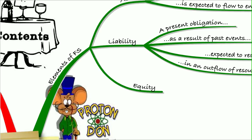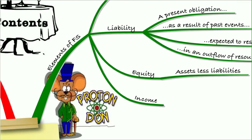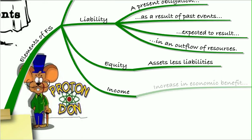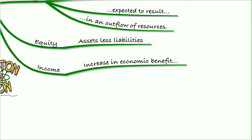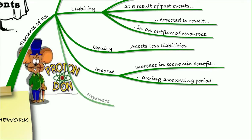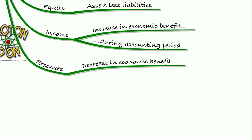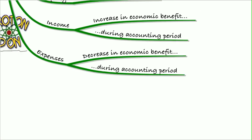The equity in an entity therefore is the assets less the liabilities. When it comes to income, remember it takes a balance sheet approach and says that an increase in economic benefit during the accounting period is income, that is your assets have gone up. When it comes to expenses, well that will be a decrease in economic benefit during the accounting period, again taking a balance sheet approach.